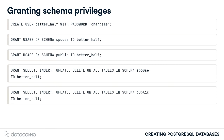You execute similar commands for the fin user account, giving access to the public and me schemas. With this arrangement, both you and your spouse can maintain your finances using PostgreSQL, with access only being shared where necessary.